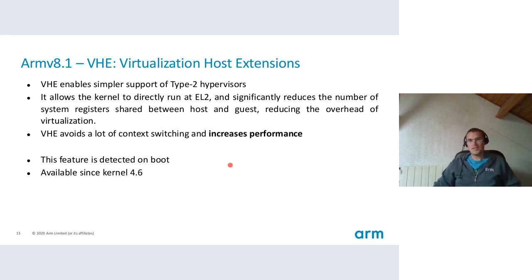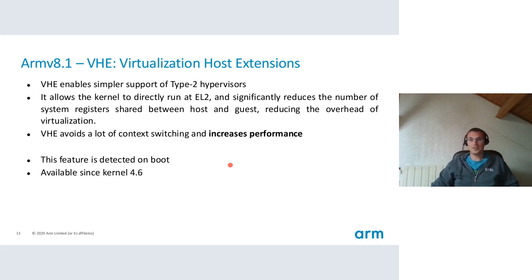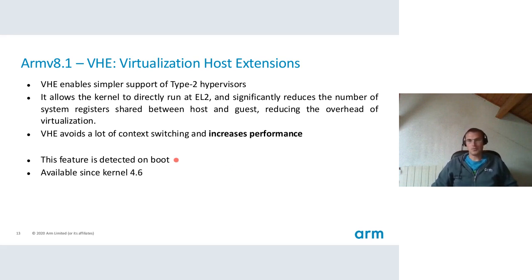Another interesting one is ARMv8.1 VHE — Virtualization Host Extensions. It enables simpler support for type 2 hypervisors. It allows the kernel to directly run at EL2 (exception level 2) and significantly reduces the number of system registers shared between host and guest, reducing the overhead of virtualization by avoiding a lot of context switching and thus increasing performance. This feature is detected on boot by the kernel and has been available since kernel 4.6.